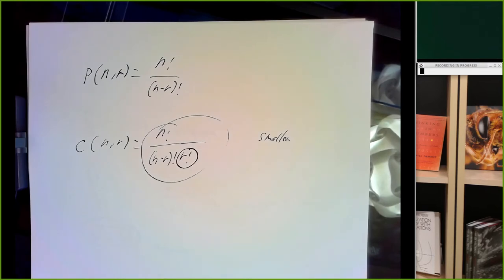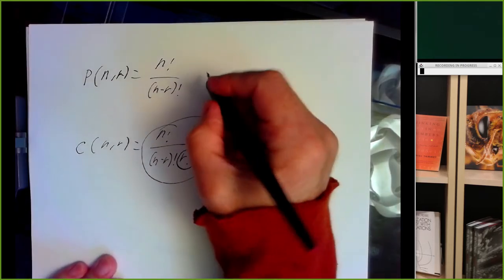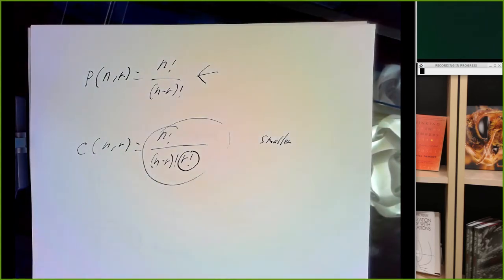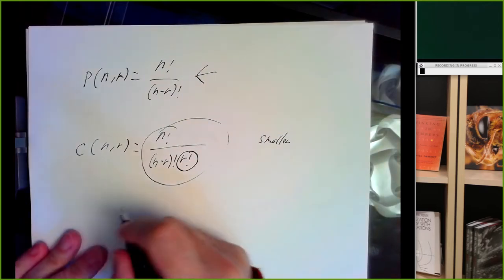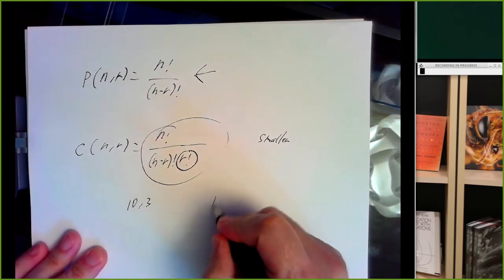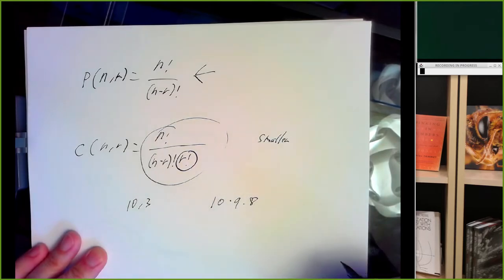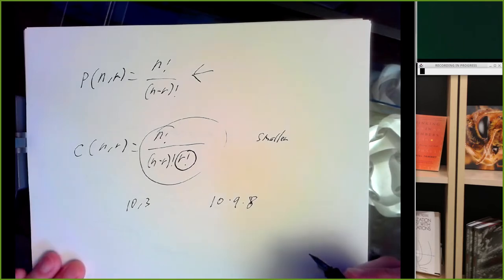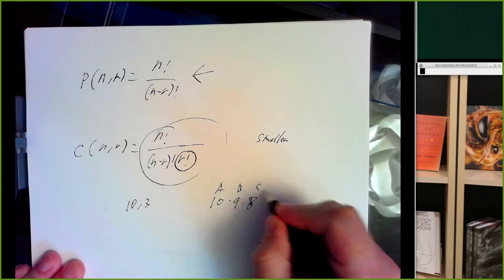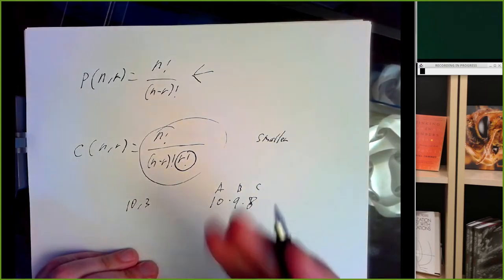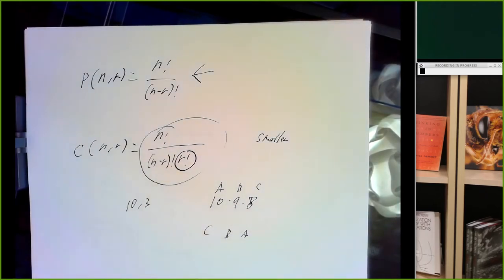You can compute combinations using the sum rule or the product rule. The product rule is really where the permutation formula comes from, but it doesn't directly apply to unordered selections. If you're trying to pick three people out of 10, the product rule says pick 10 for the first, 9 for the second, 8 for the third — but that's inherently ordered. If you pick person A, then B, then C, and you don't care about order, that's the same as picking C, B, A. When we use the product rule, we're really thinking of a sequence of tasks, so we get a permutation rather than a combination.